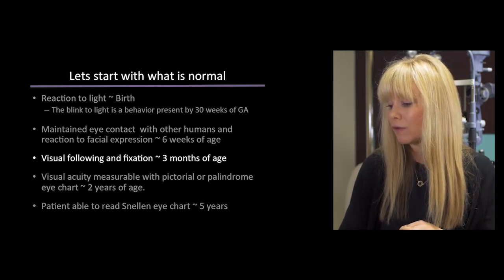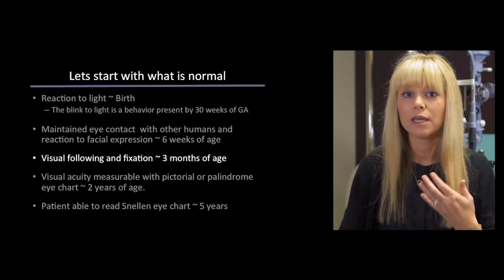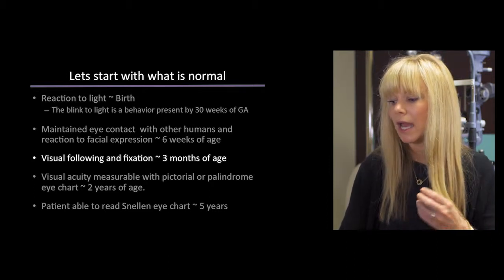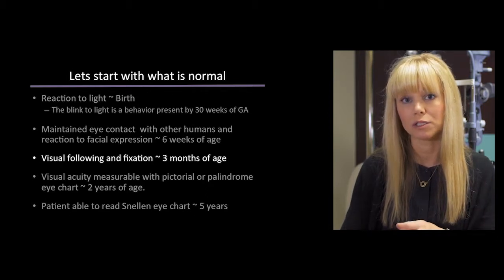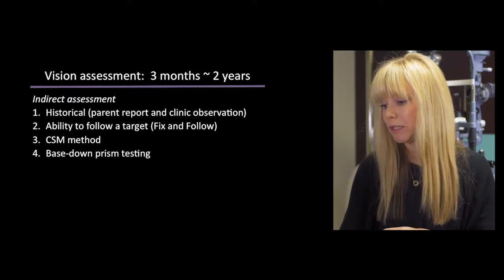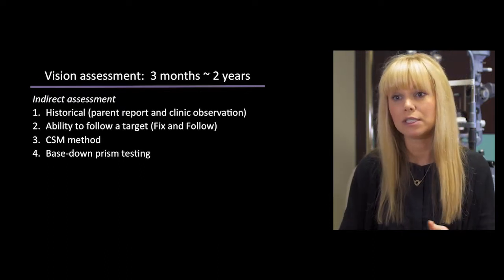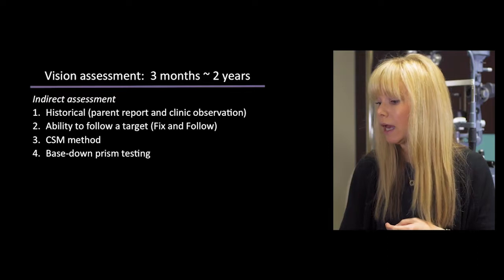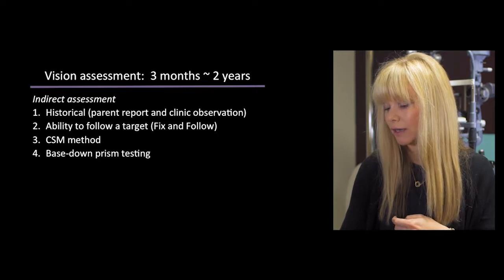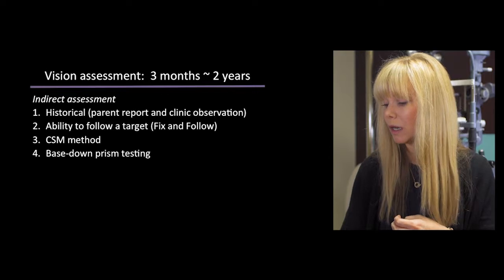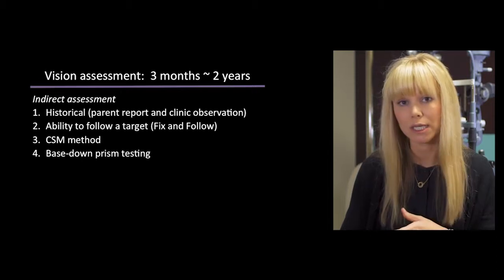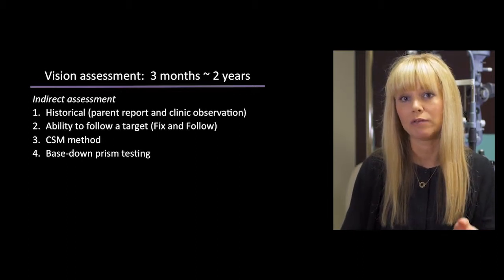Blink to light and fixation on faces are fairly self-explanatory. For fixation and following behavior starting around three months of age, there are multiple assessment approaches. The first category is indirect assessment — asking parents historically whether the child looks at and follows things in space. We can also test directly whether the patient can fix and follow a target. We use the CSM method to more quantify this behavior, and base-down prism testing to understand the fixation behavior of each eye individually.